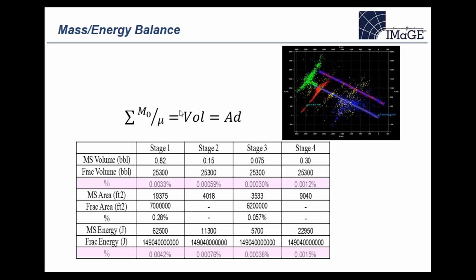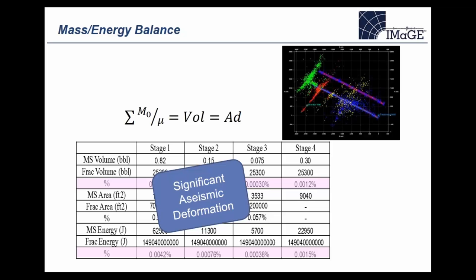Comparing that volume with the volume of fluid injected into the formation: the microseismic volumes estimated for the four stages are less than a barrel in oilfield units, even though we've injected over 25,000 barrels of fluid. The ratios show that the microseismic activity — the snaps and cracks we hear during hydraulic fracturing — is one part of the deformation, but a lot of deformation takes place aseismically. The slow opening of the tensile fracture is an aseismic process, and based on both volume and energy considerations, that aseismic deformation is larger than the microseismic deformation.